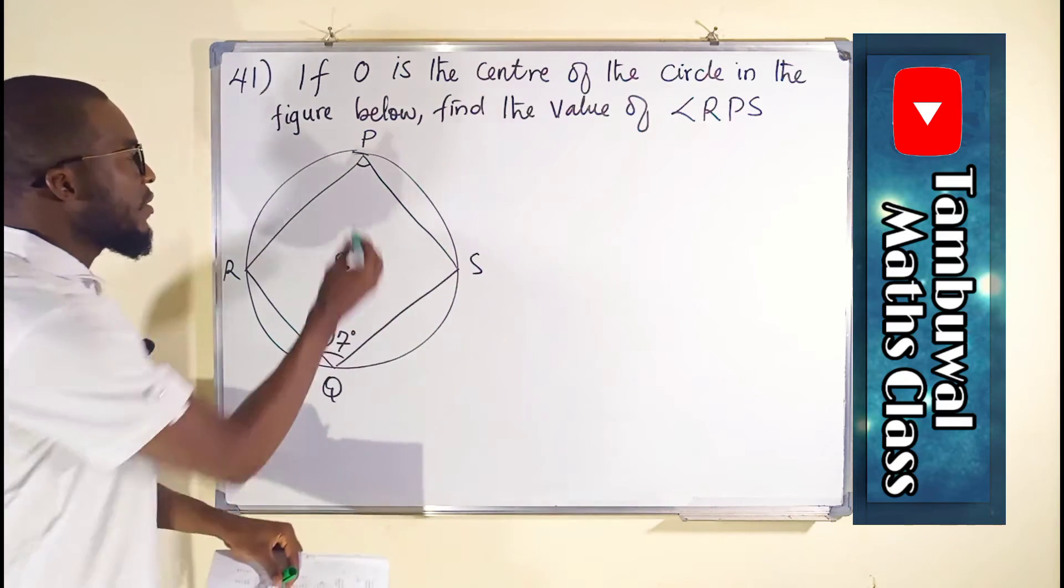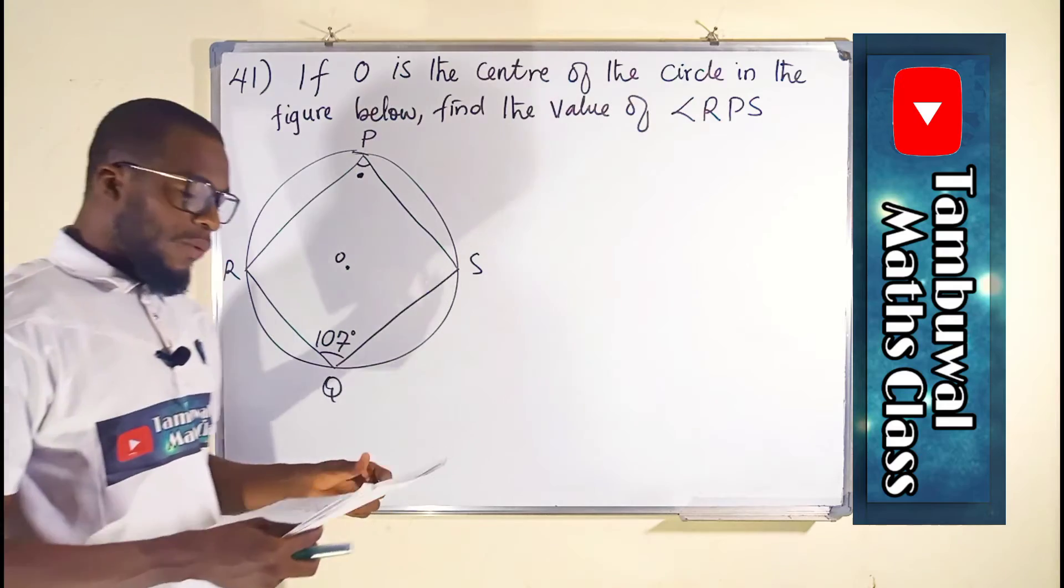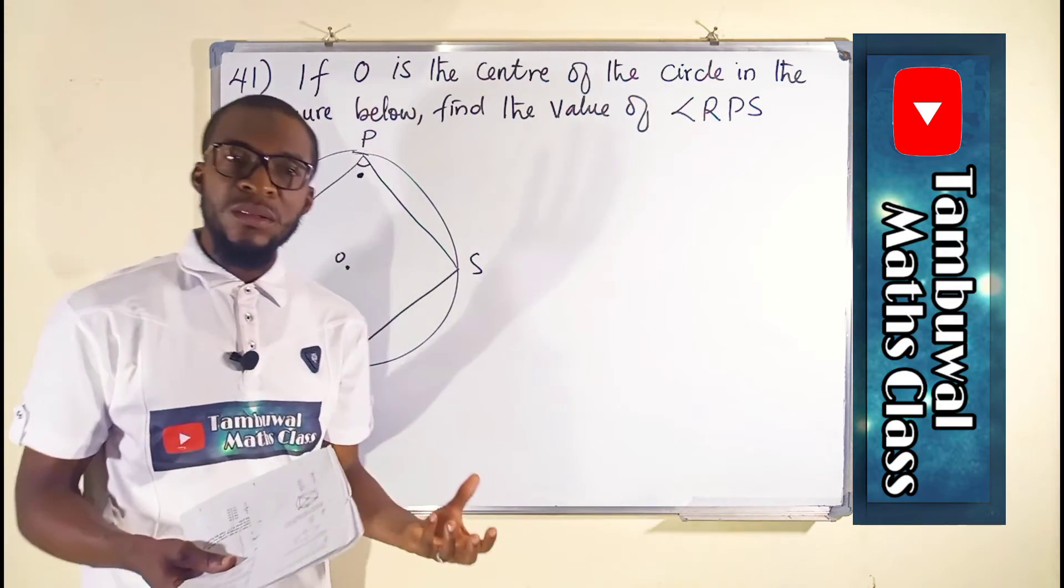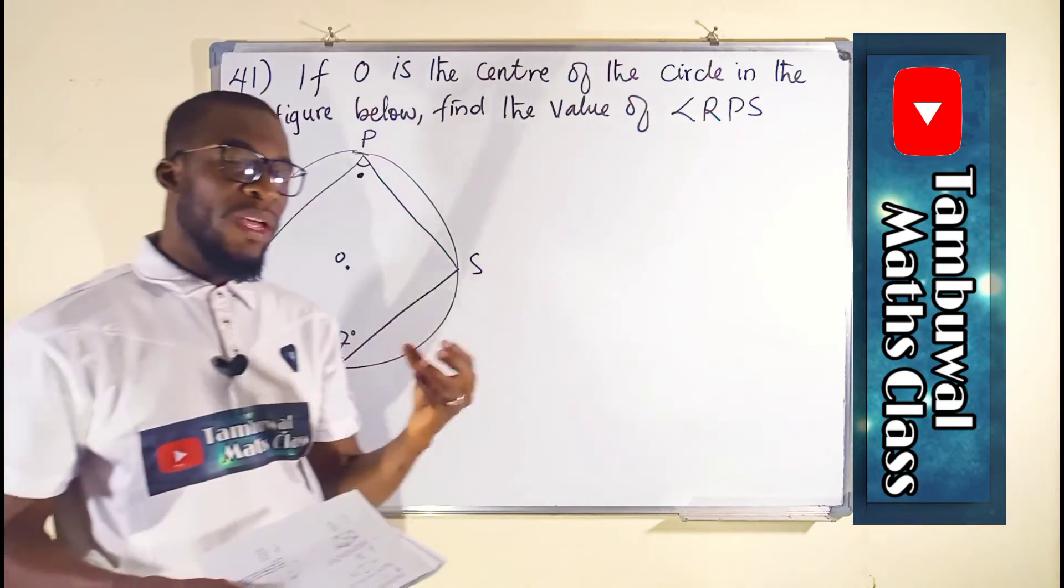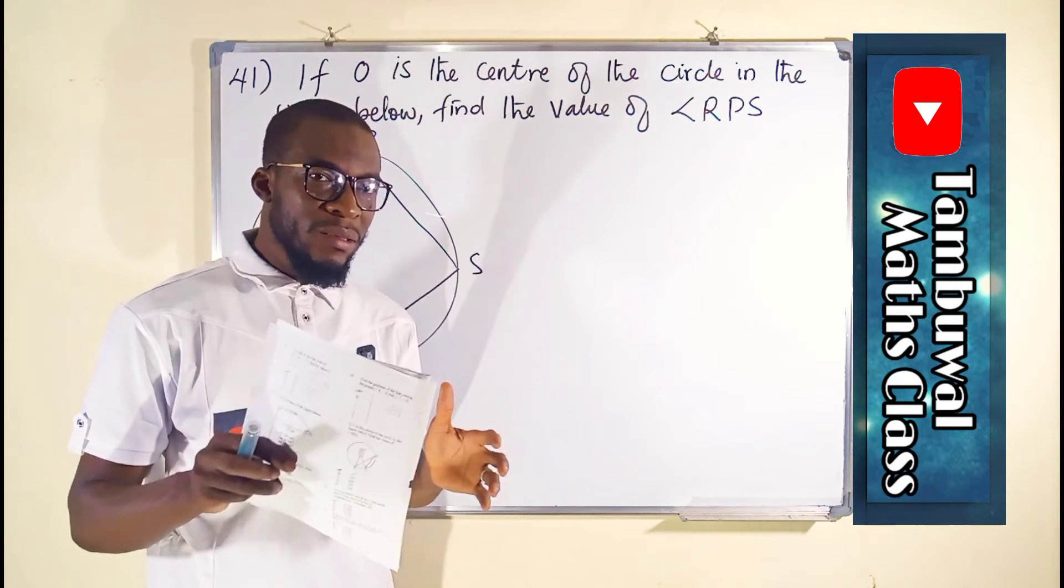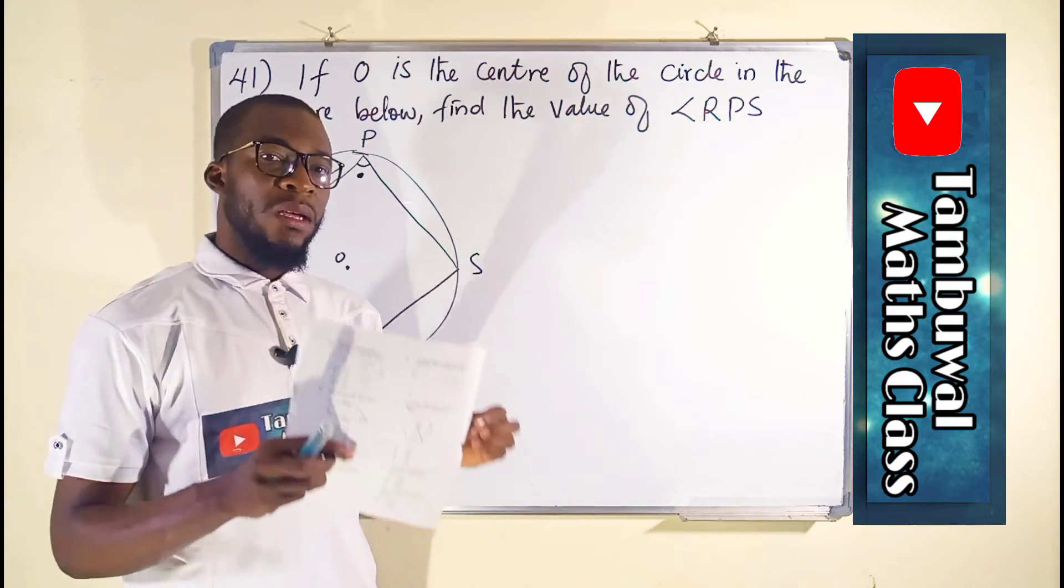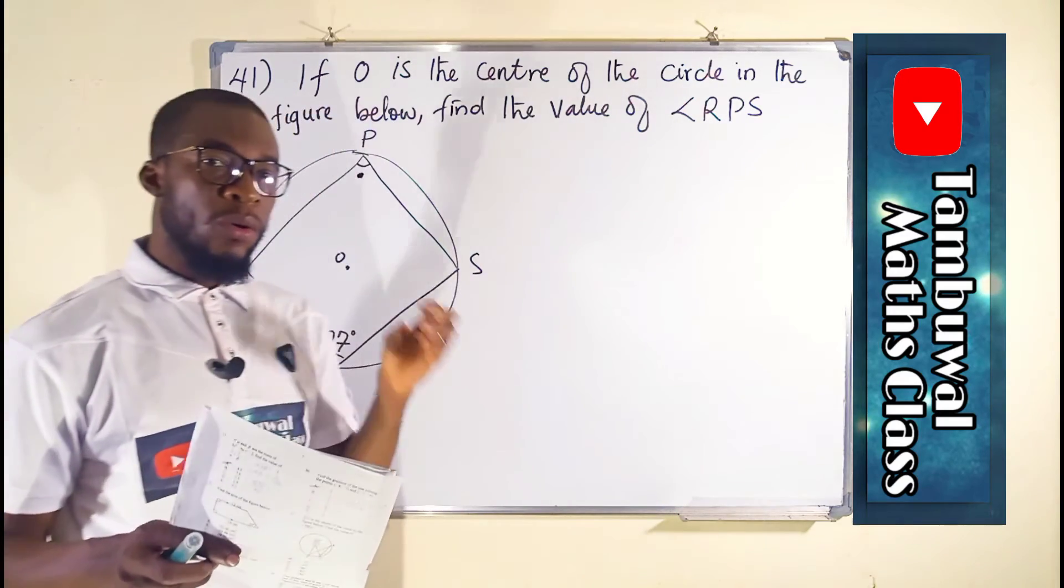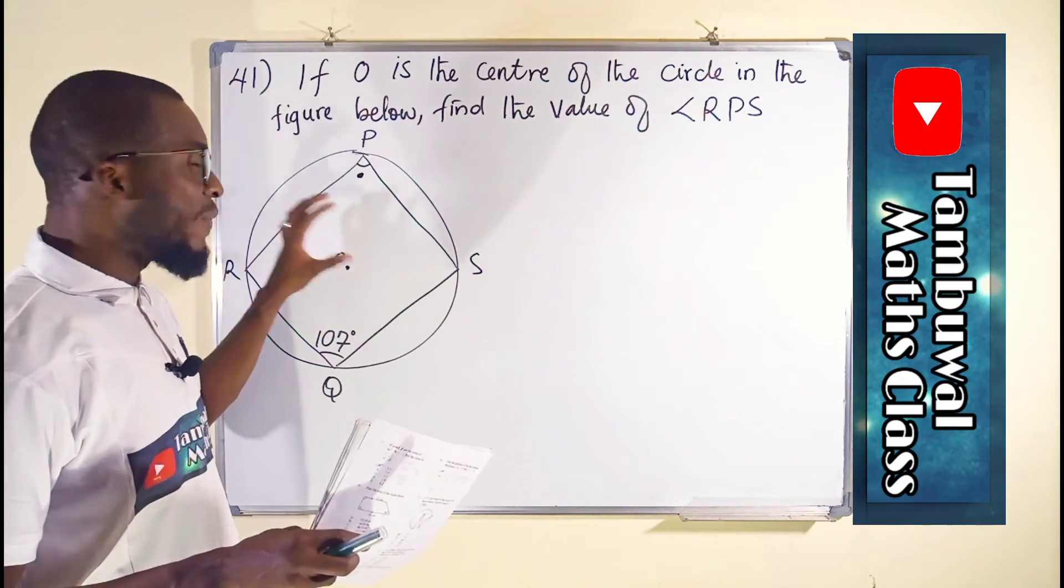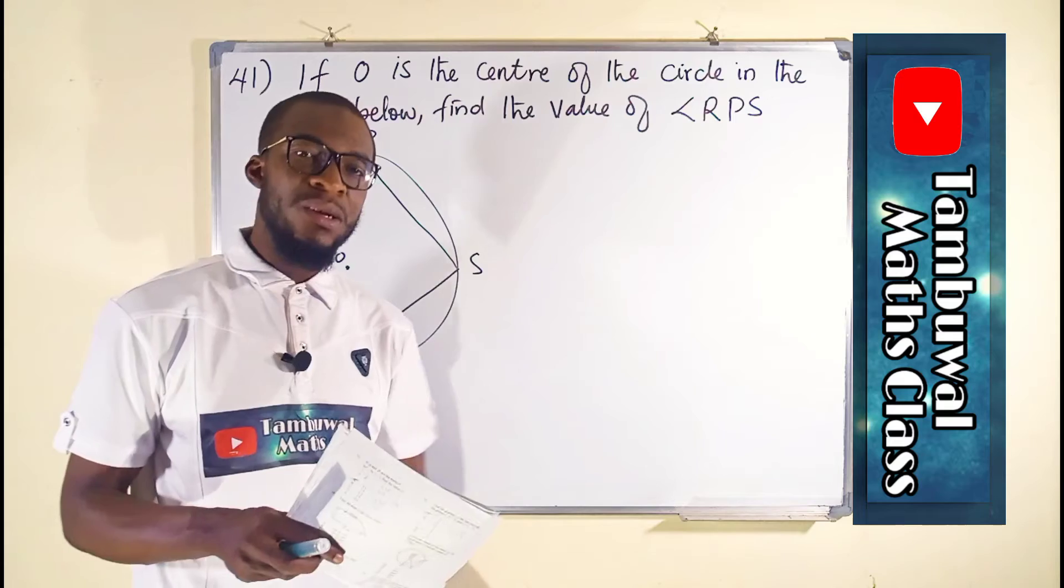This is exactly the angle we are looking for. From circle theorem, if you have a quadrilateral inscribed in a circle in which all its vertices touch the circumference, the sum of the interior opposite angles of that quadrilateral will be equal to 180 degrees.